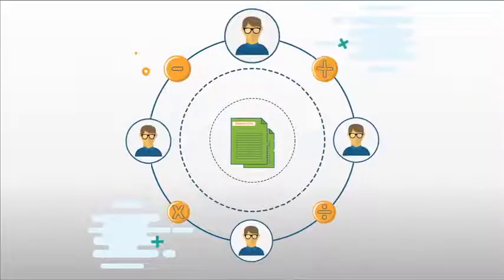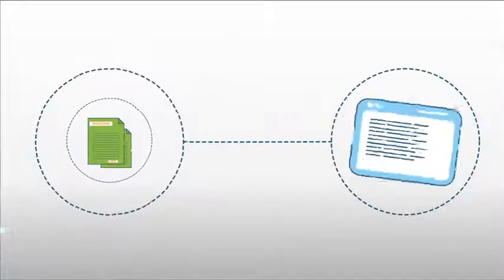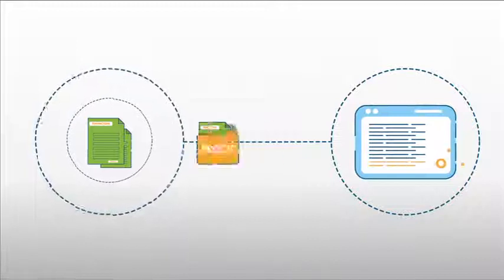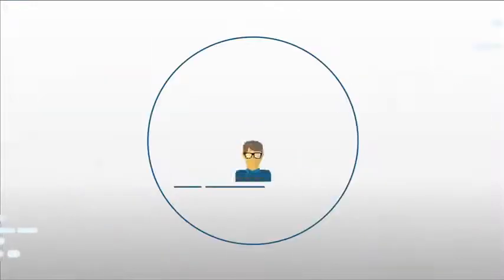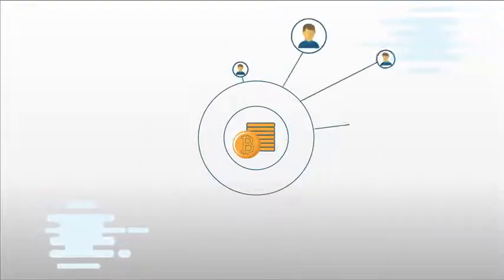The members of the network confirm the transactions by solving mathematical problems. Once a transaction is completed, it is added to the list of transactions called a block to be added to the public ledger. The member who solves the problems fastest gets rewards, which attract more members to join the network.